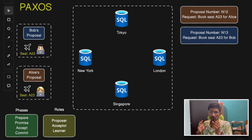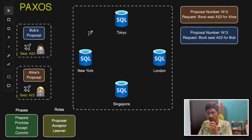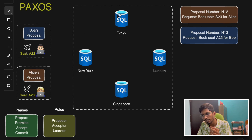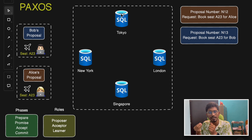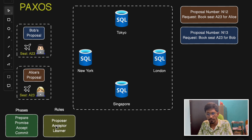Paxos is a family of consensus protocols used to achieve agreement in a distributed system. The key point is agreement first — nodes agree on what change to accept, then commit it. It's not like a database update request is sent to one node and it directly updates. They first agree upon a particular decision, then commit the write request to the database.